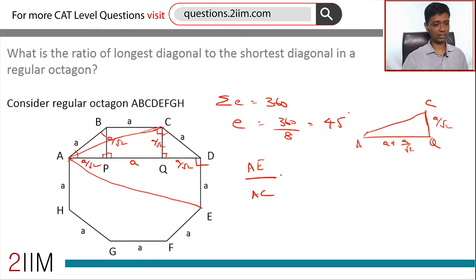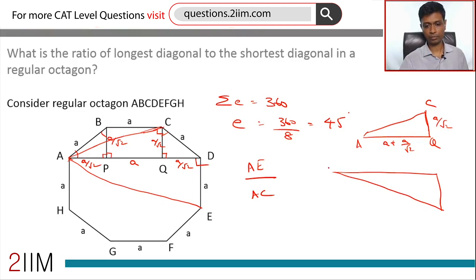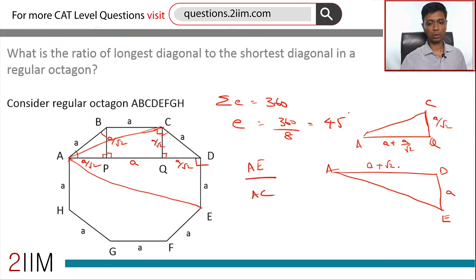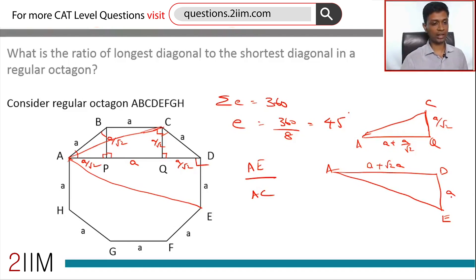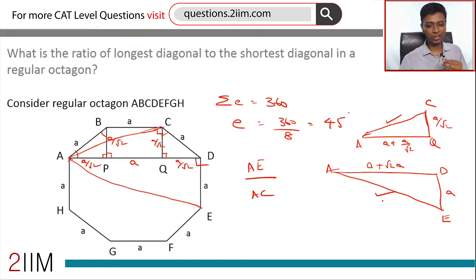To find AE, consider right triangle ADE. The legs are AD = a + √2·a and DE = a, giving AE by Pythagorean theorem. So we apply Pythagorean theorem twice — once for AC using triangle AQC, and once for AE using triangle ADE — and then take the ratio. That gets us the answer.